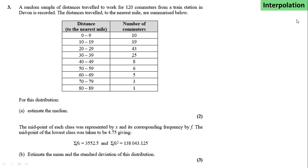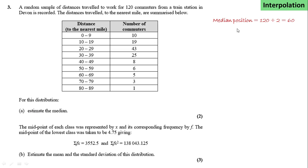The next question requires interpolation. A random sample of distances travelled to work by 120 commuters from a train station in Devon is recorded. Between 0 and 9 miles there were 10 commuters, between 10 and 19 there were 19, and so on. We're asked to estimate the median. We first work out the median position: 120 divided by 2 equals 60.